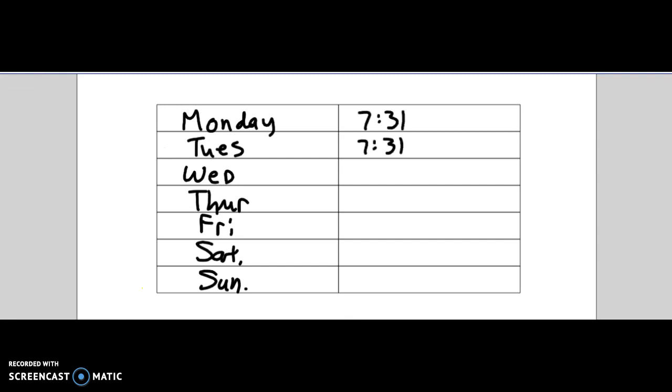All right, so on Monday, sun rose at 7:31 a.m., Tuesday 7:31, Wednesday, Thursday, Friday 7:32, and then 7:33 and 7:34.